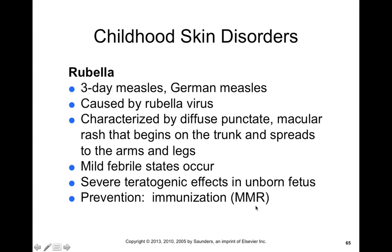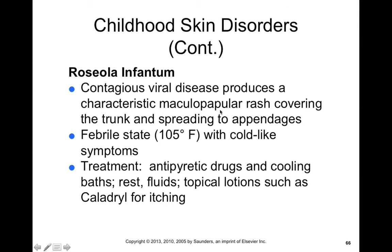Roseola — also called exanthem subitum — is a contagious viral disease that has a characteristic macular-papular rash. It covers the trunk and spreads to the appendages, and produces febrile states of 105 degrees Fahrenheit or more, as well as cold-like symptoms. It's treated with antipyretic drugs to reduce that fever, cooling baths, and topical lotions for any itching.